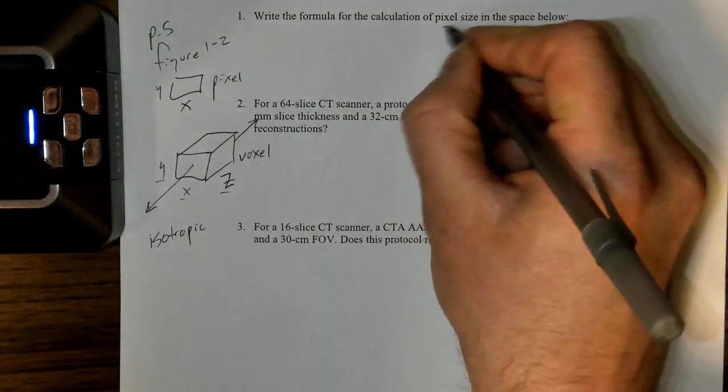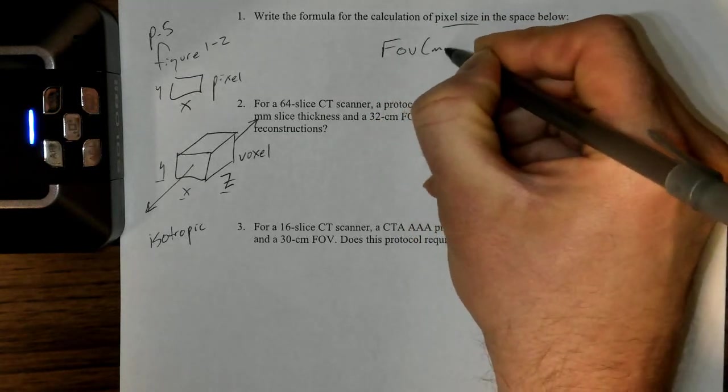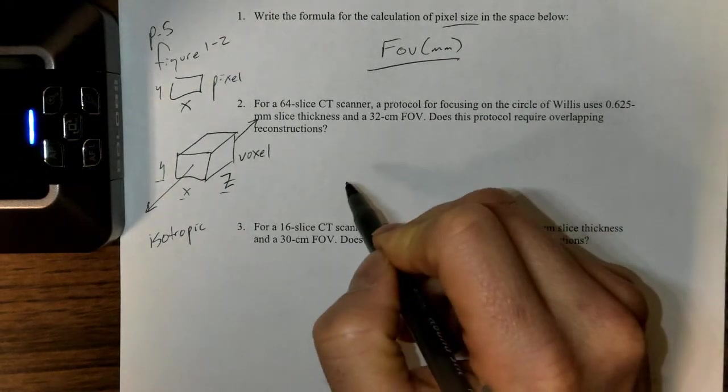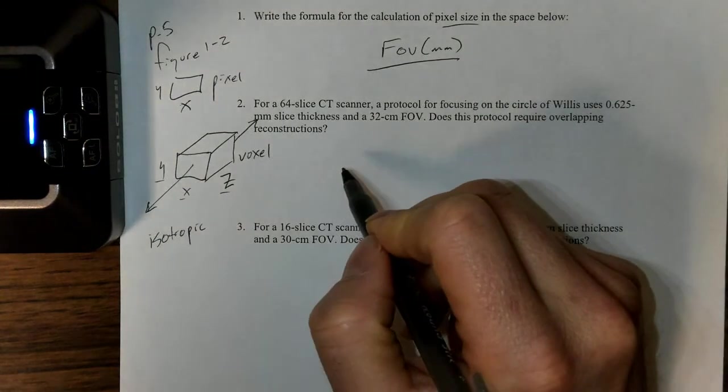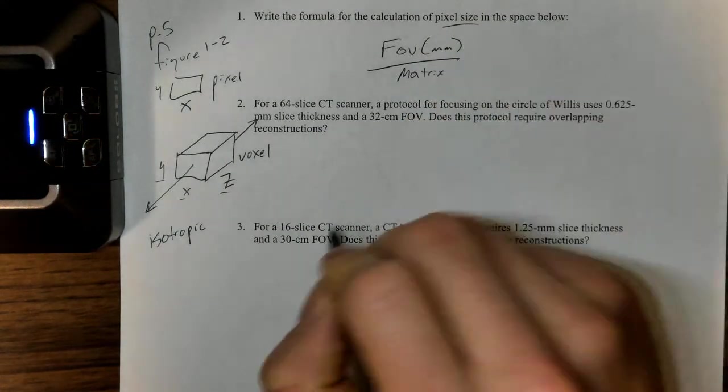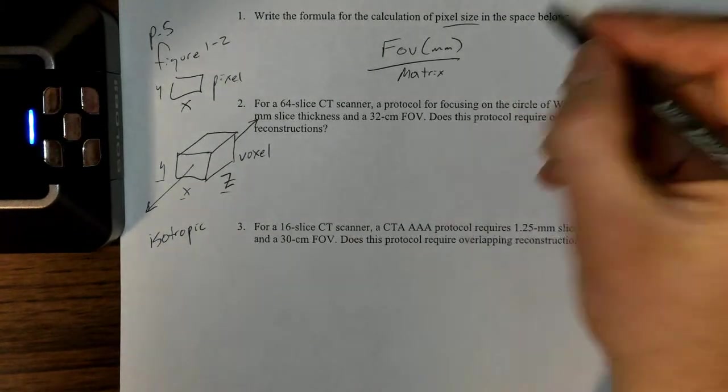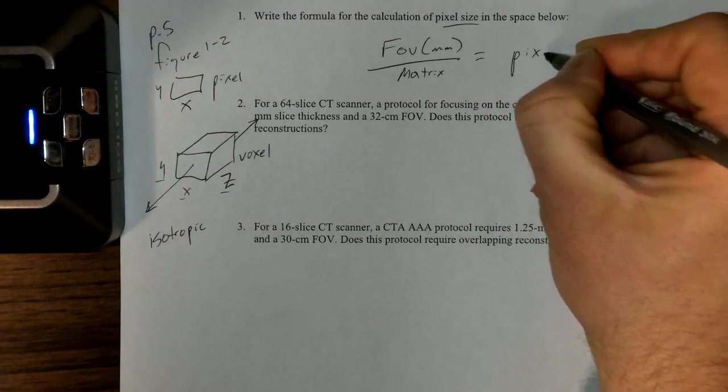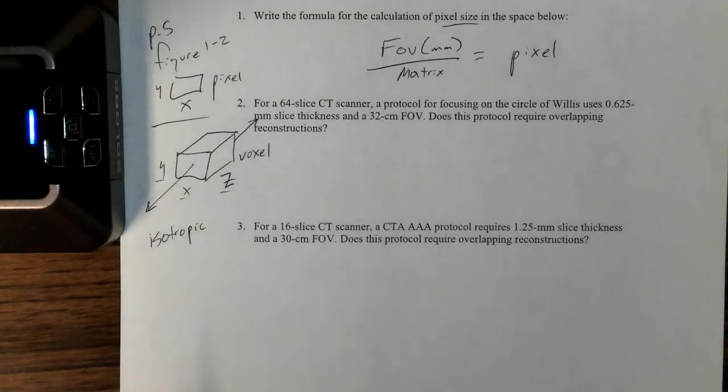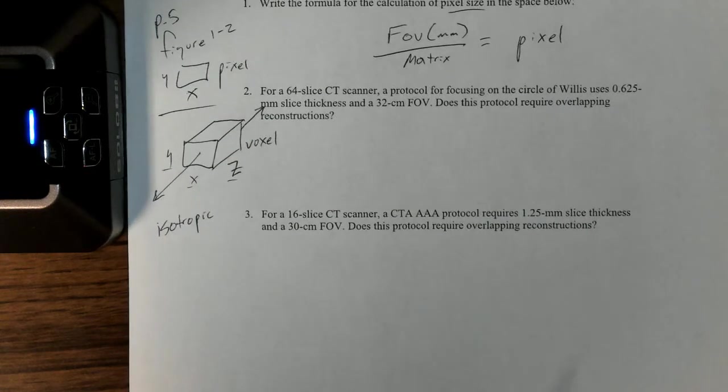The formula for a pixel size is going to be the field of view—and that's going to be measured in actual millimeters, so that's important. Some of us may have missed it on the quiz; if you have it in centimeters or whatever, no, it needs to be converted to millimeters for this calculation to work—divided by the matrix size, which in CT the most common matrix size is 512. That will give me the pixel size. That gives me the amount of information in the x and y directions, the size roughly square of each pixel.